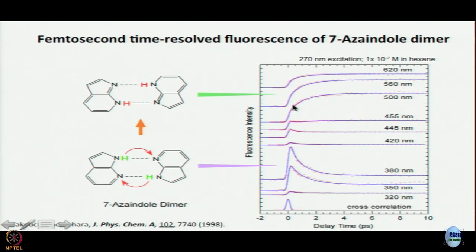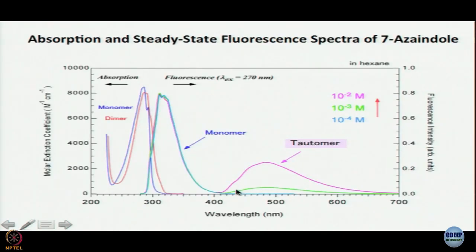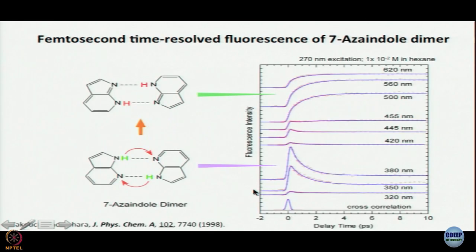These are not normalized, which is why you see differences in heights. At 320 nanometers — the blue end of the spectrum — the intensity is really small. You see a decay; it becomes more and more prominent as you go to 350 nanometers, 380 nanometers. When you go to 420 nanometers, the intensity is small again — 420 nanometers is somewhere in the crossover region. Just before and after 400 nanometers intensity is small, but you have already crossed over from the locally excited dimer to the proton transfer dimer. And here you see it looks like there is a fast decay still there, but there is something that is very long-lived, becoming prominent at 440 to 445 nanometers.